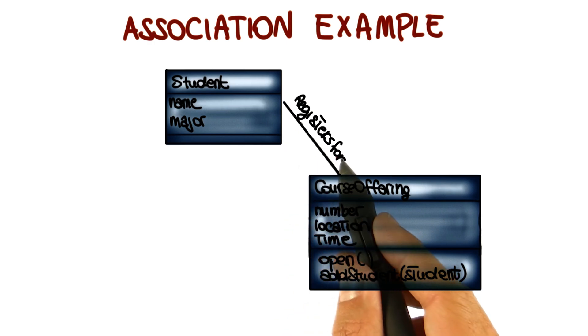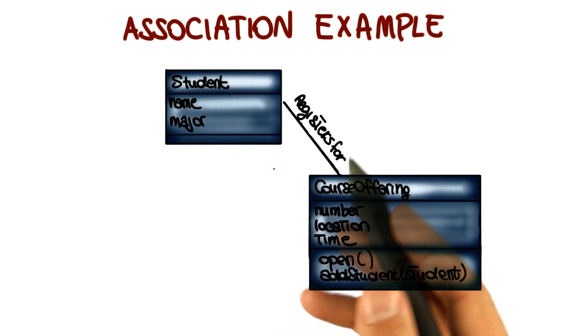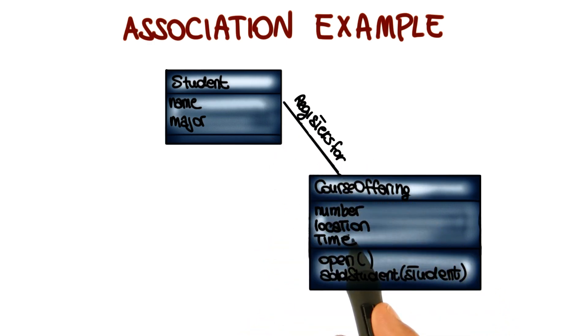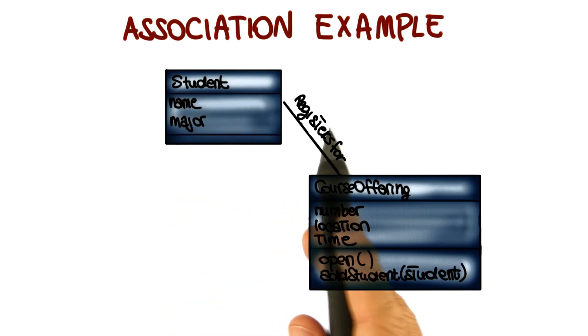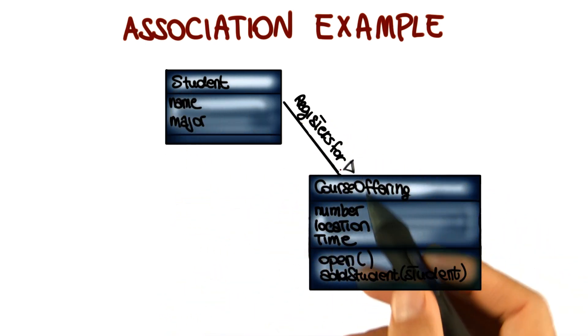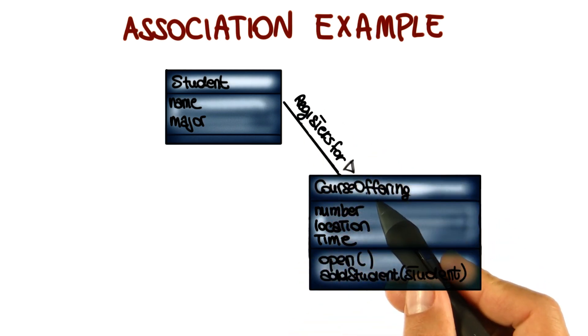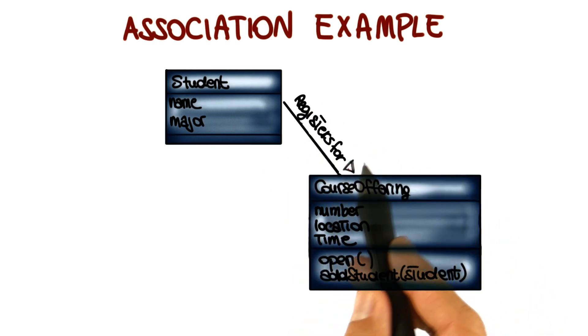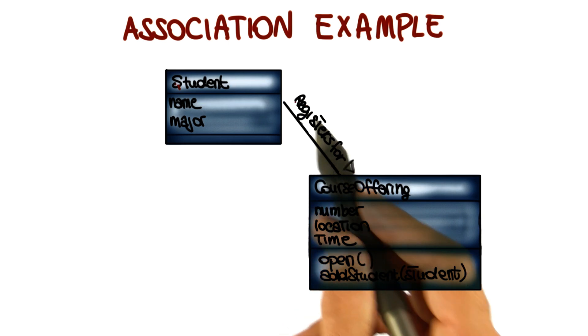In particular, we can add a label to an association, and the label describes the nature of the relationship. In this case, for example, it clarifies that the student registers for course offering. We can also add a triangle to further clarify the direction of the relationship. So in this case, the triangle will indicate that it is the student that registers for the course offering and not the other way around.